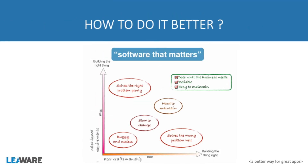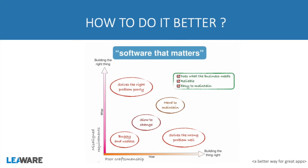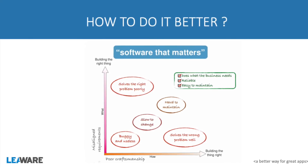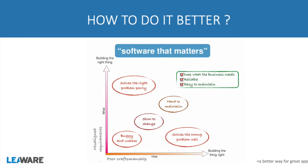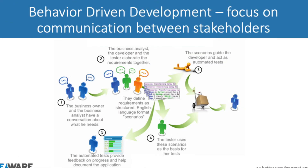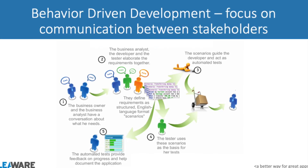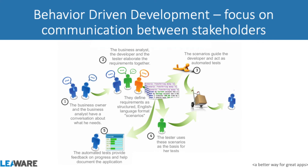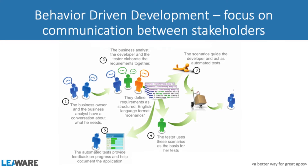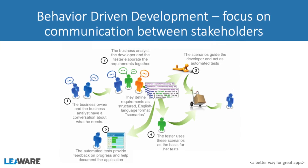Now you should ask: is there another way to do it better? Of course there is. The only way is to build the right software and to build the software right. As you can see on this chart, it's possible and it happens when you do both things together. So first, let's come back to requirements. The most important thing is to have a methodology that allows us to write down requirements in a form that is understandable in the same way for the developer, the client, the tester, the analyst — for everyone in the project.